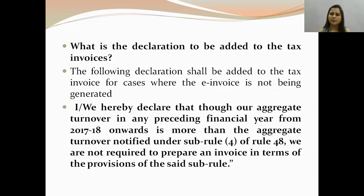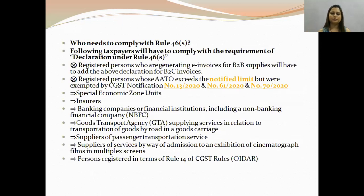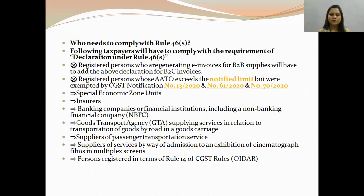So when these invoices are made, they will not make an e-invoice, and under their regular invoice there will be a declaration as per Rule 46S. Who needs to comply with Rule 46S? Those who are exempt from e-invoicing, such as: Special Economic Zone units, insurers, banking companies, financial institutions, GTA (Goods Transport Agency) companies, suppliers of passenger transportation services, cinematograph, and persons registered under Rule 14 of CGST Rules — OIDAR service providers.